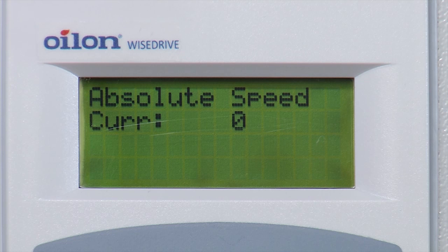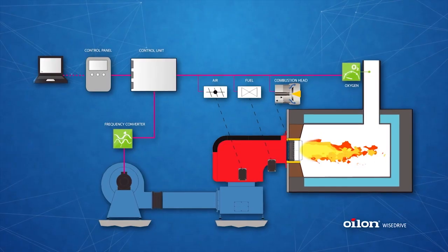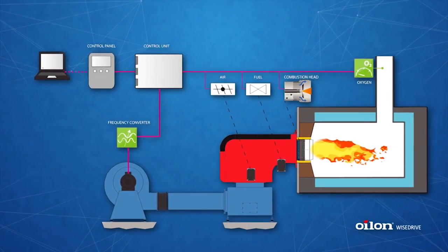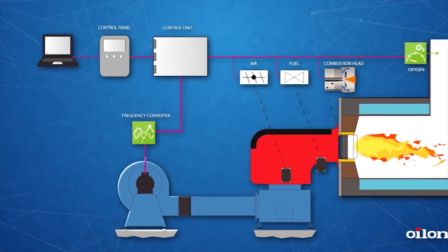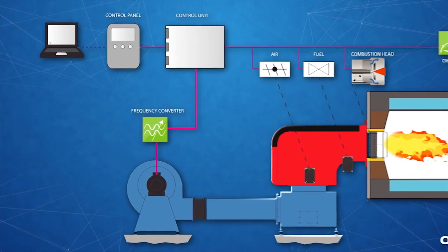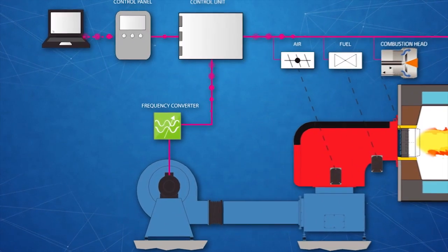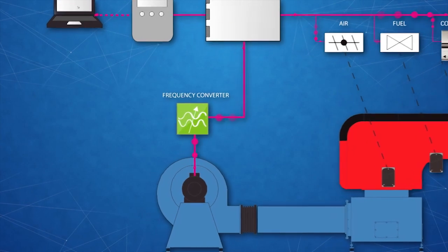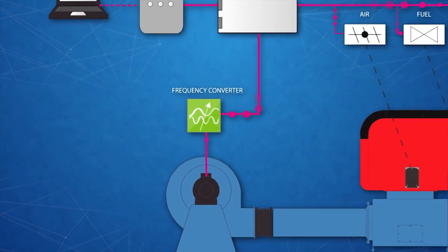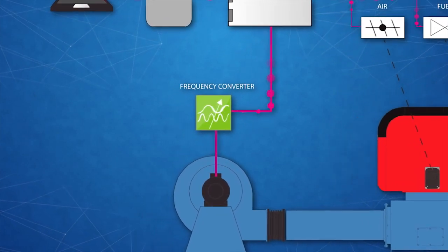The fan motor provides air pressure for efficient combustion and can be fitted with a variable speed drive. The variable speed drive adjusts the air pressure according to the burner's capacity by controlling the fan speed.